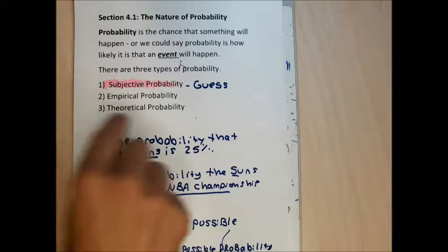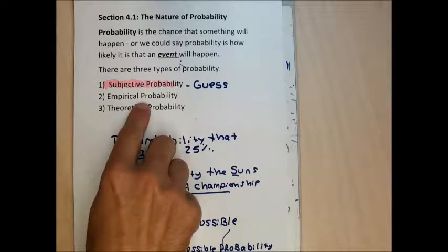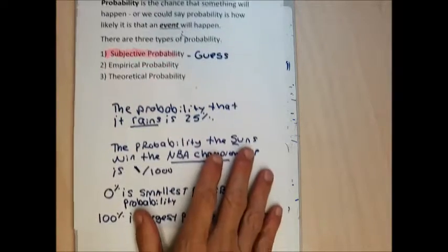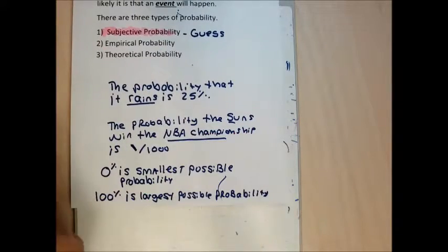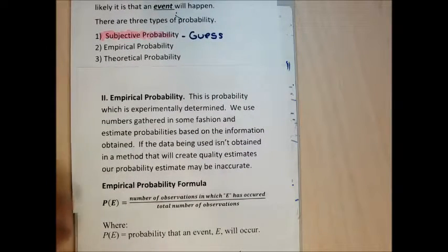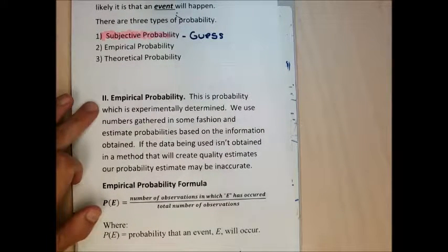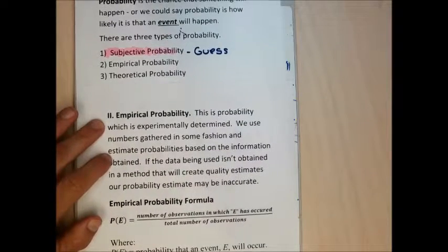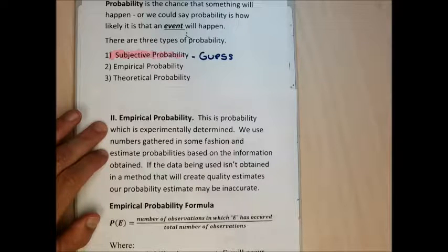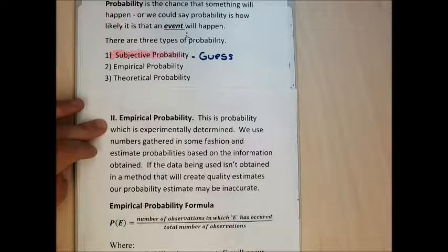The next kind of probability we'll look at in this section is empirical probability. Empirical probabilities are probabilities that are experimentally determined. You don't need to write down these definitions. Eventually we'll learn how to use the concepts, but don't worry about the definitions.